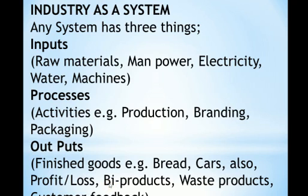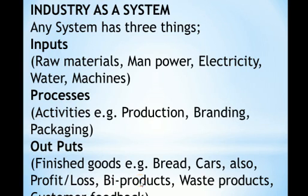A byproduct is any product from the industry which may be a remnant of the production process but still has some purpose or use. For example, coffee husks from coffee processing industries can be used as fertilizers in agriculture. In sugar processing industries, bagasse — the remainder of sugarcane after squeezing out the juice — can be used to produce electricity. Waste products, by contrast, have no purpose and are thrown away. Customer feedback is also an output.